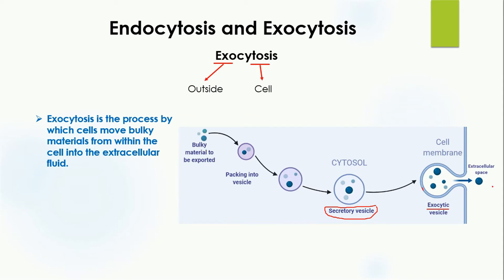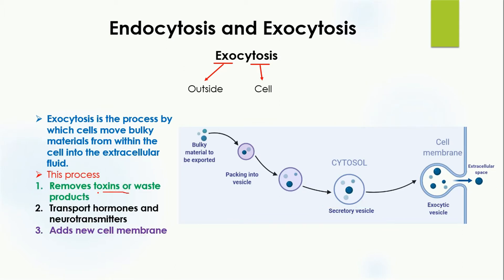Exocytosis is very helpful for removing toxins and waste products from the cell. Hormones and neurotransmitters produced inside the cell are also easily transported out by exocytosis. Another benefit is that exocytosis adds new cell membrane — since endocytosis pinches off membrane to form the endocytic vesicle, exocytosis replenishes it when the exocytic vesicle fuses back with the cell membrane.